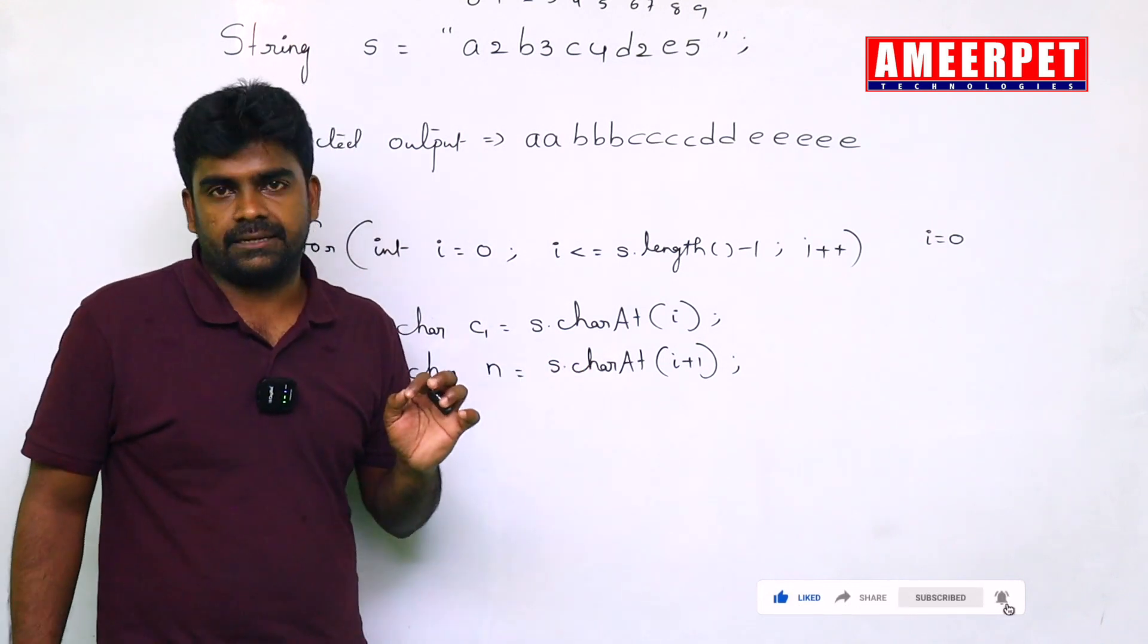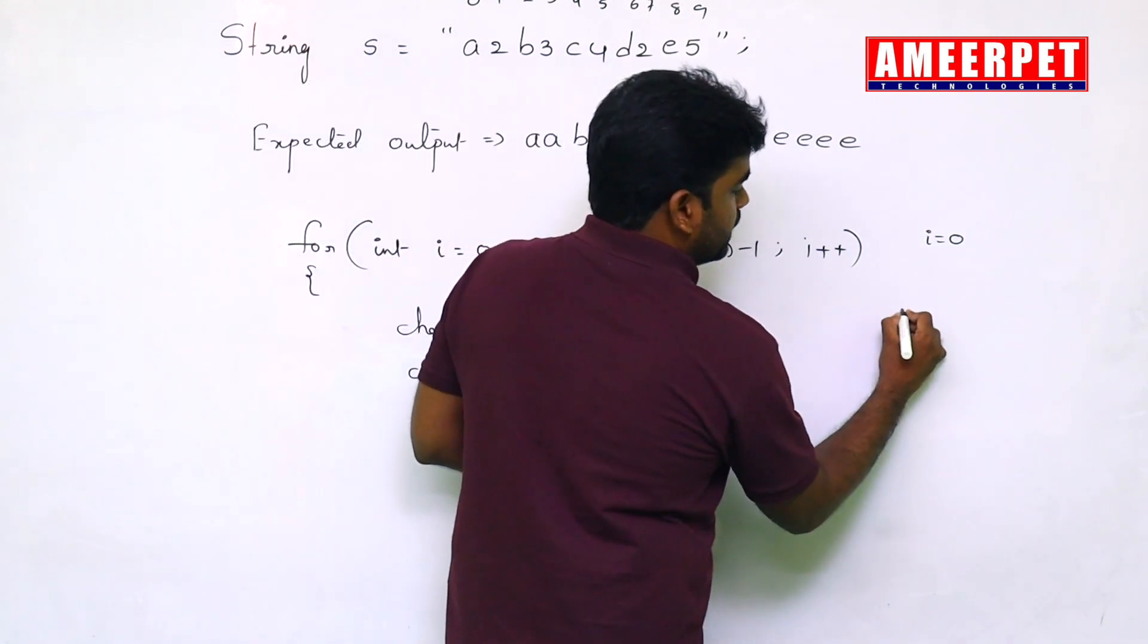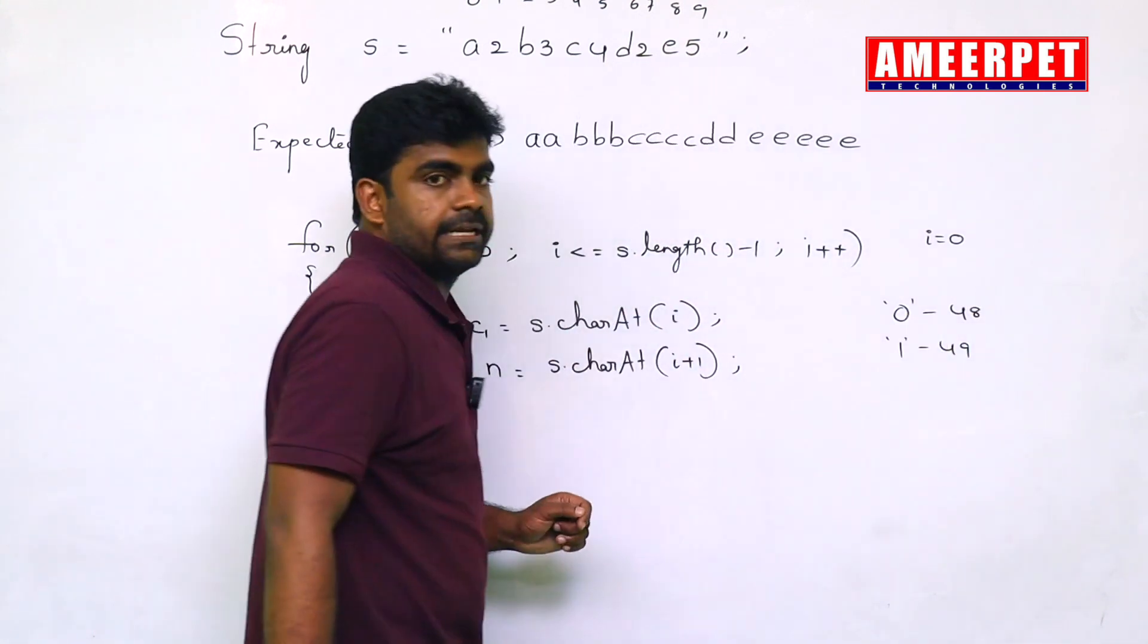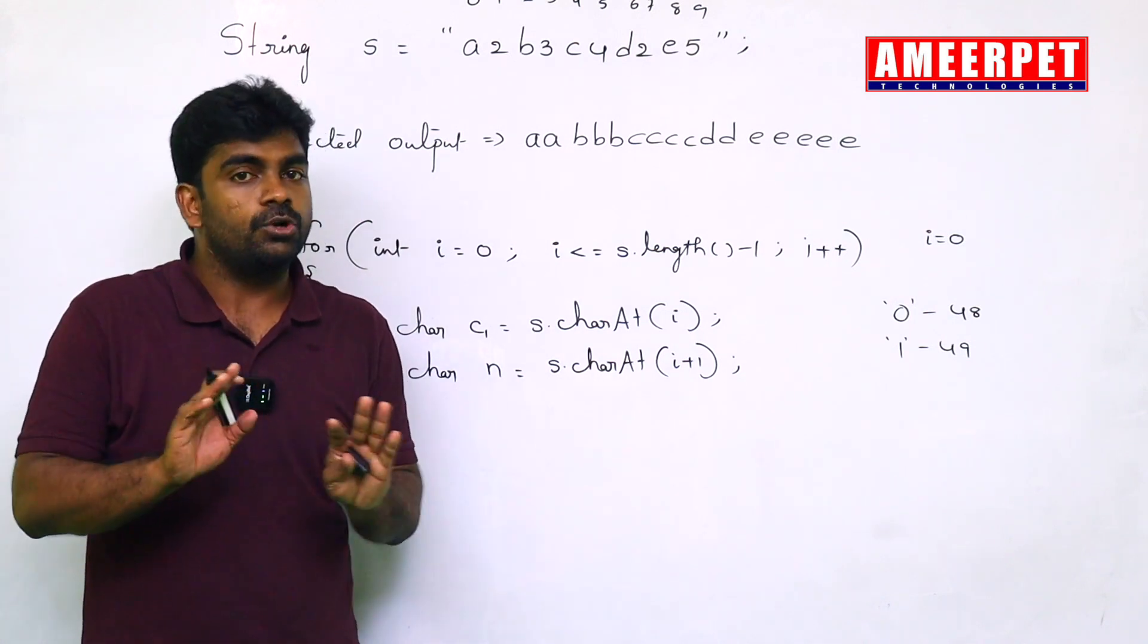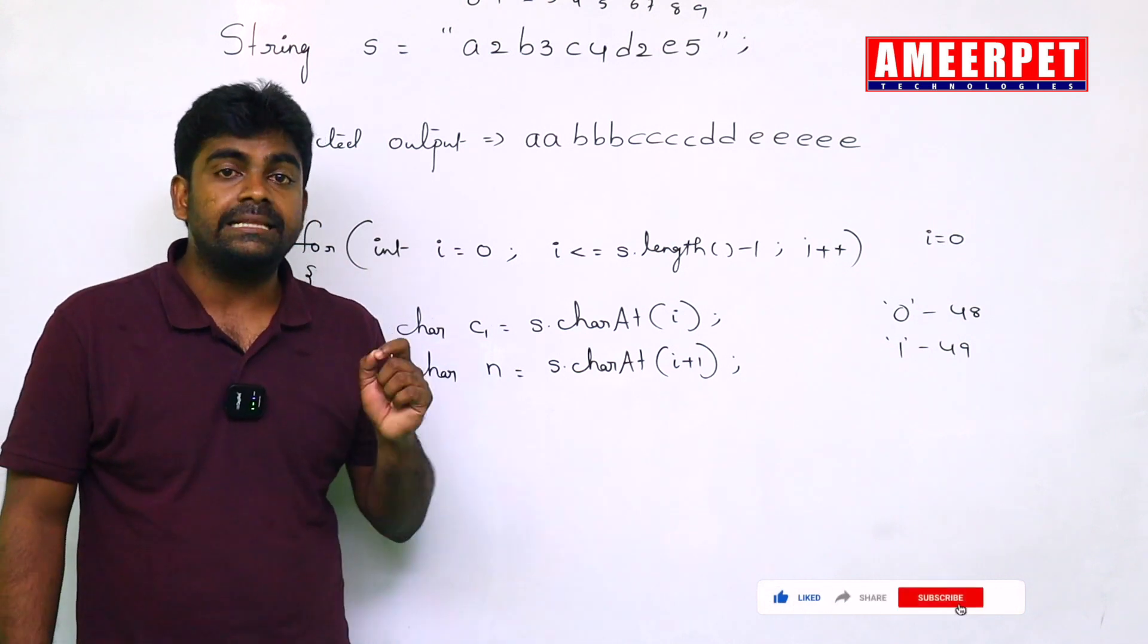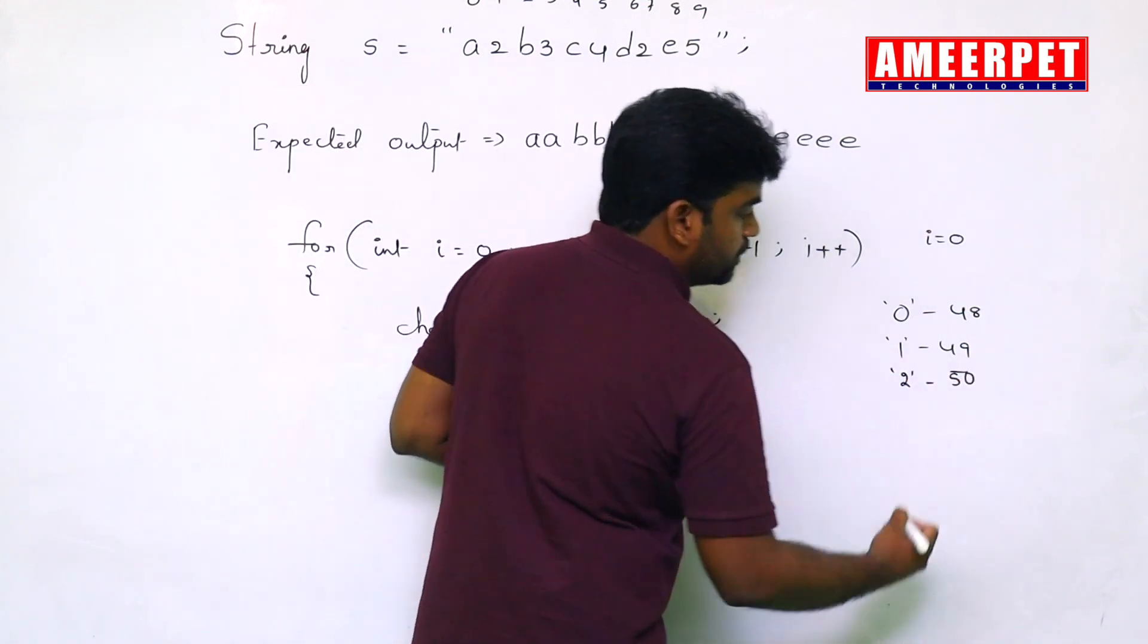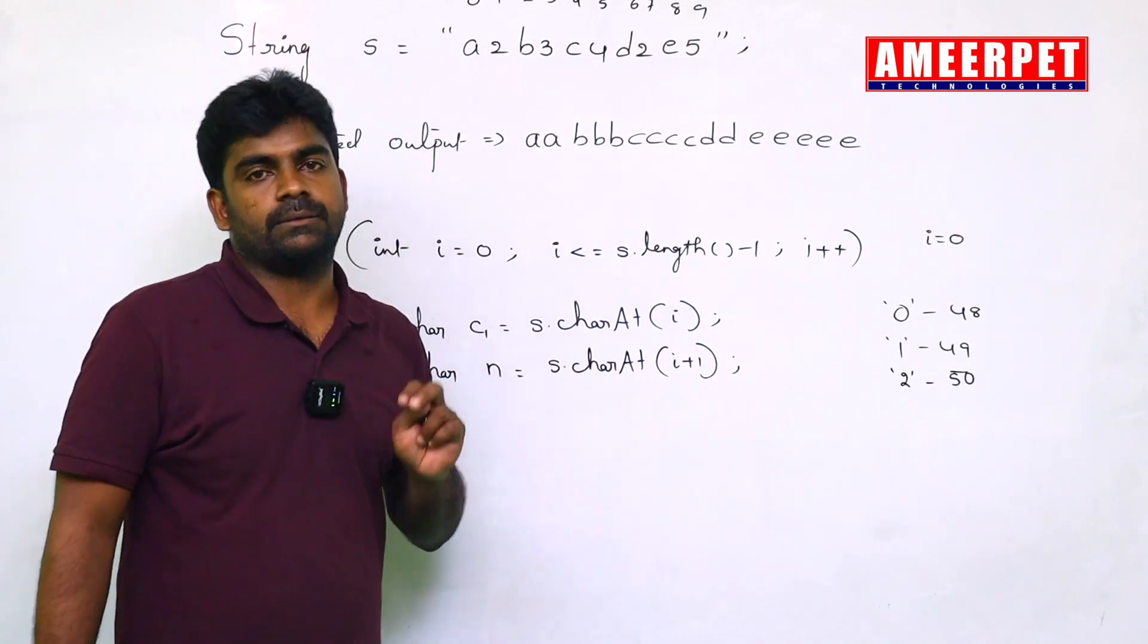But remember, it is a character. We already discussed that character 0 means value 48, character 1 means value 49. 49 times it will repeat. We should not repeat 49 times. We should repeat only the number times.